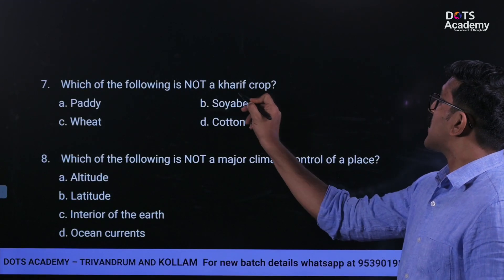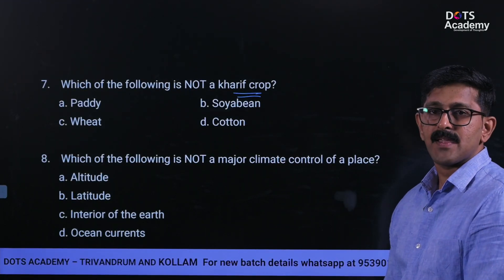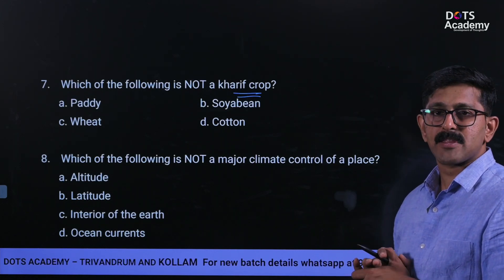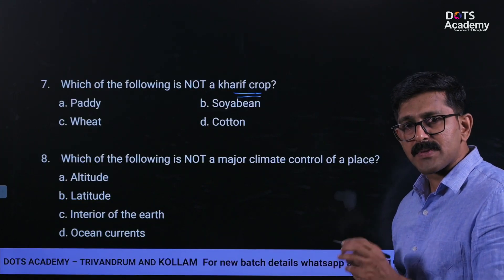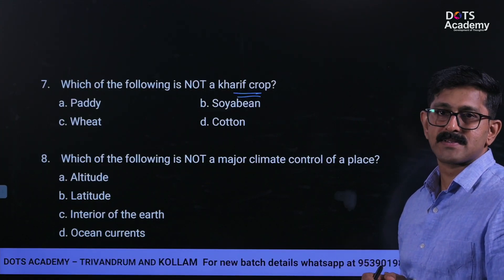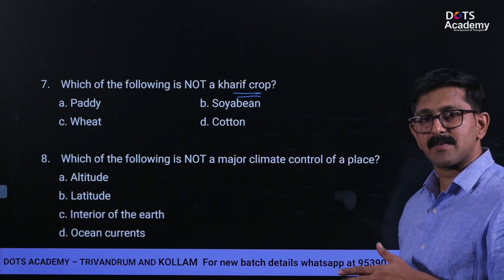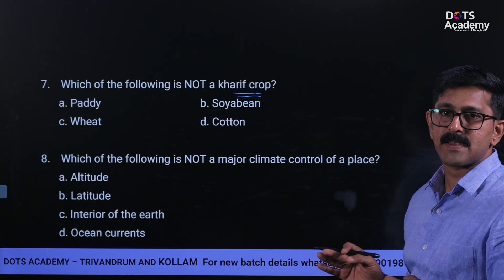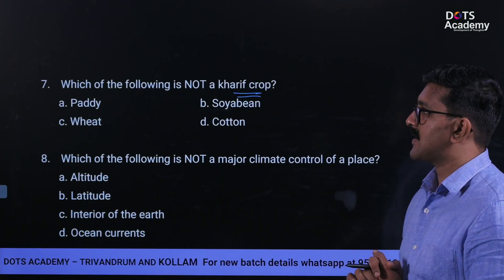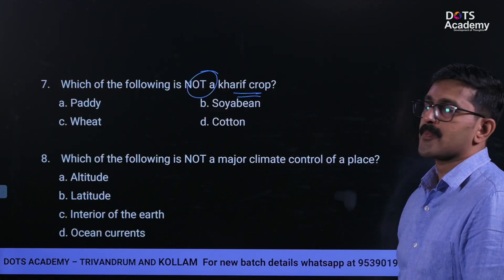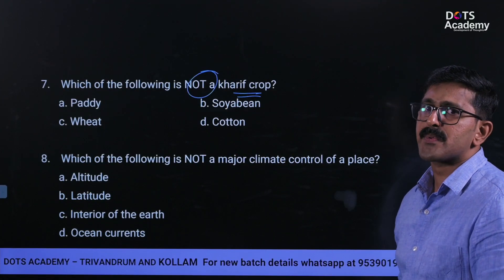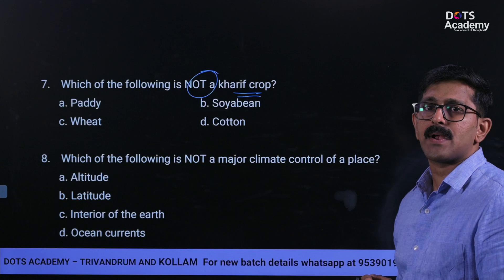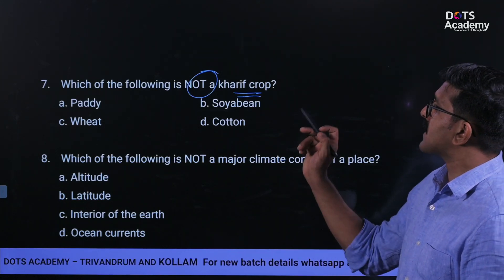Which of the following is not a Kharif crop? Kharif crops, Rabi crops, and Zaid crops are the crop seasons in India. There is a detailed video on crop seasons available. For competitive exams like CGL, CHSL, MTS, and CIPO, crop season knowledge is important. Wheat is not a Kharif crop — it is called a water-intensive crop. The best example clarifying this is that wheat is a Rabi crop, not a Kharif crop.